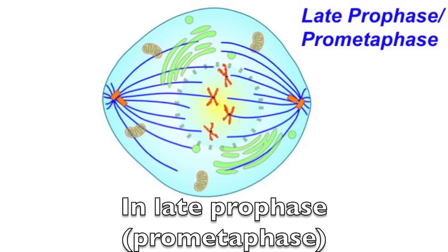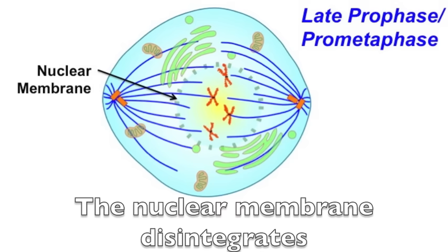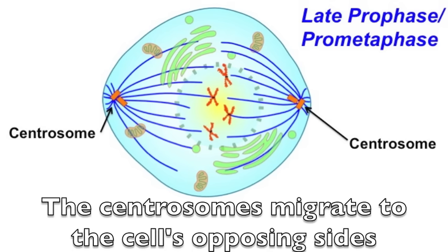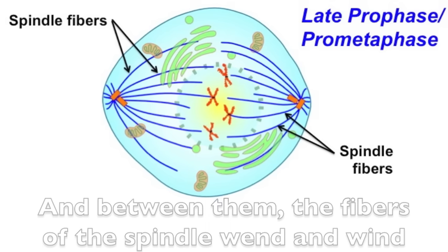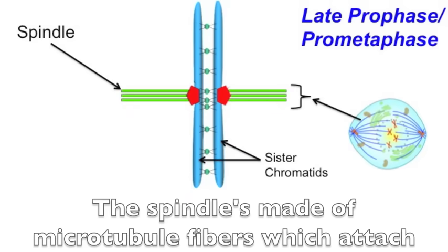In late prophase, prometaphase, the nuclear membrane disintegrates. The centrosomes migrate to the cell's opposing sides, in between them the fibers of the spindle wend and wind. The spindle's made of microtubule fibers which attach to chromosomes. A kinetochore is a protein patch that serves like a handle that the fibers can grasp.